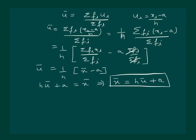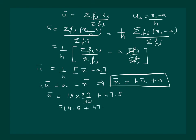Let us calculate the mean for our question now. x̄ equals H times ū plus A, which is 15 times (29/30) plus 47.5, equal to 14.5 plus 47.5, equal to 62.